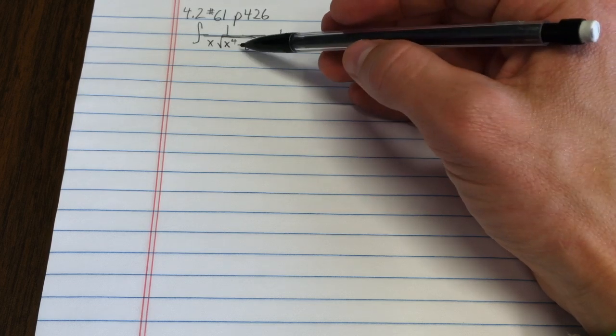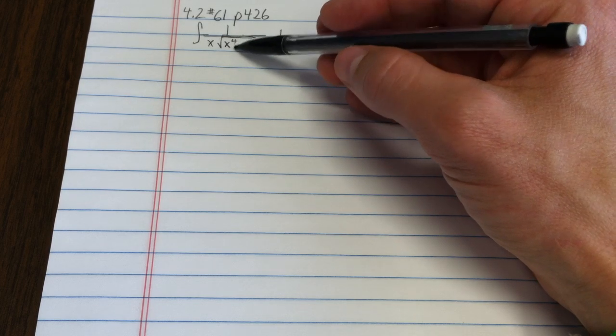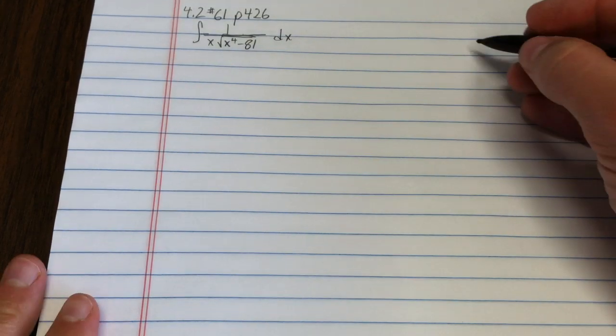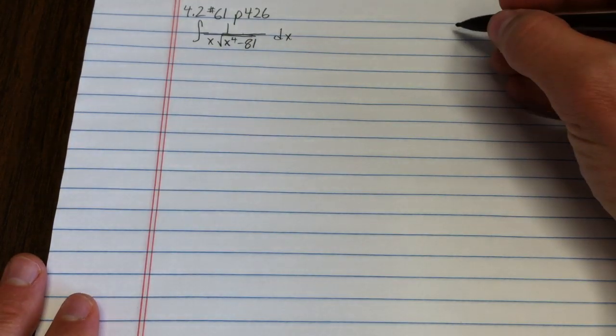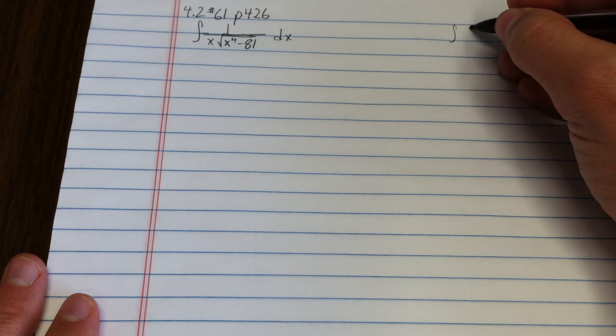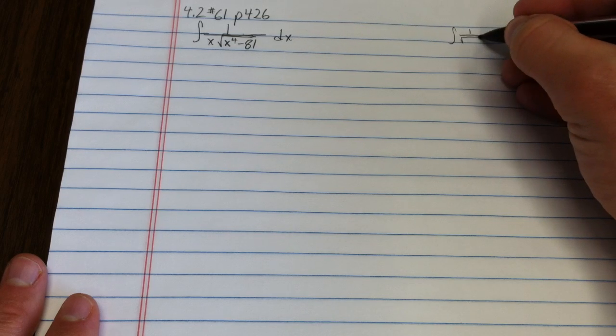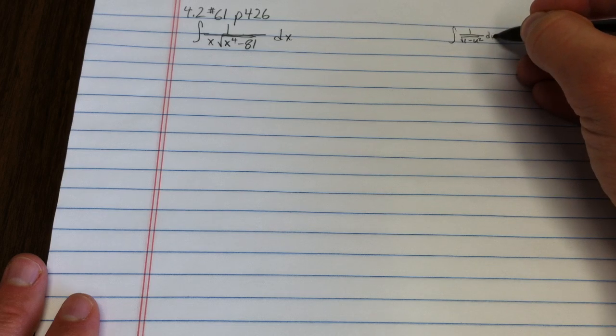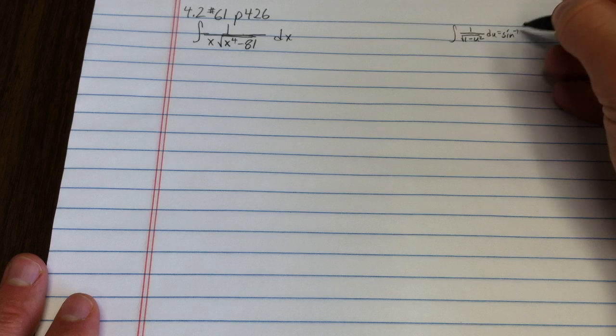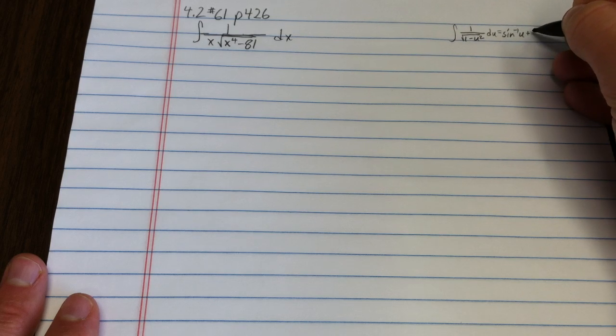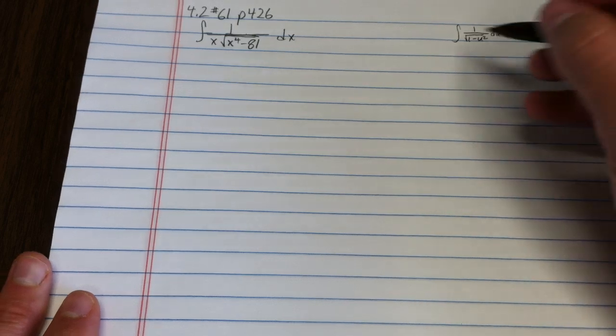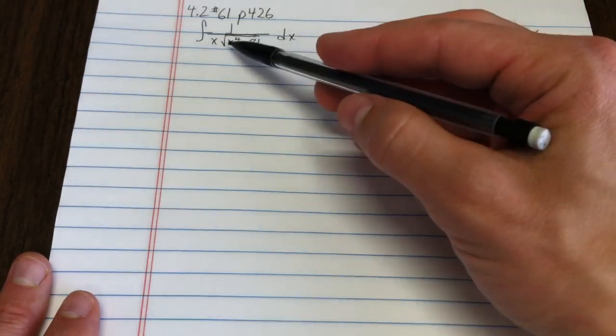Then you might think to yourself, I do have something that has a square root and the difference of two things. So off in the back of my head, I know that the integral of 1 over the square root of 1 minus u squared du is equal to the arc sine with sine inverse of u plus c.